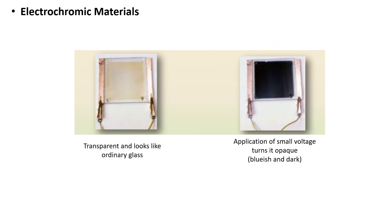Next in the list is electrochromic materials. These materials change their optical behavior with application of electrical voltage. Their behavior is basically characterized by the amount of light they allow to pass through them. Here in the picture is shown two materials. The first one is transparent and looks like ordinary glass. The second one with application of a small voltage turns it opaque, bluish, and dark.